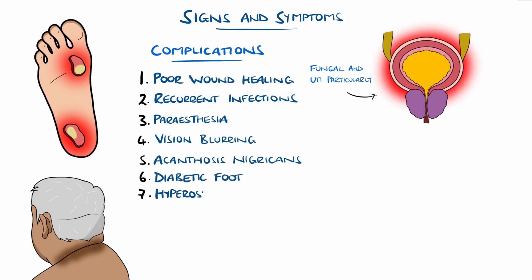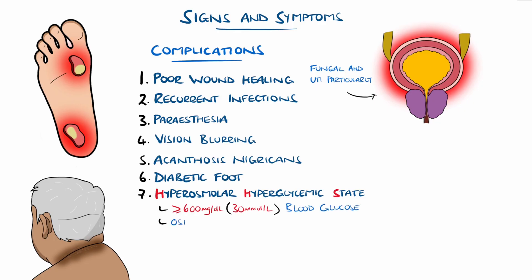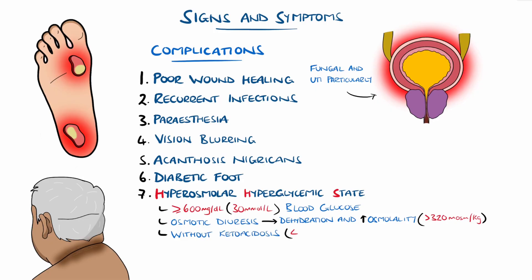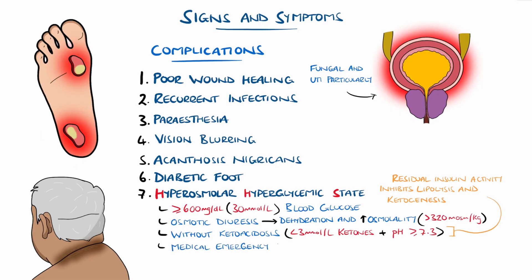Less commonly, patients may suffer hyperosmolar hyperglycemic state, or HHS, which is characterised by marked hyperglycemia, typically above 30 millimoles per litre, or 600 milligrams per deciliter, leading to osmotic diuresis, where excess fluid is lost through the kidneys as a result of the high glucose, leading to dehydration and hyperosmolality. This is without significant ketoacidosis, which distinguishes it from diabetic ketoacidosis. This is because in type 2 diabetes there is residual insulin activity, and so lipolysis and ketogenesis are suppressed. It is a medical emergency requiring fluid resuscitation, and typically develops over days in response to illness, infection, or inadequate insulin.